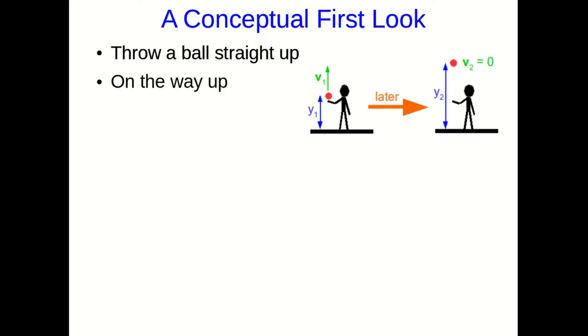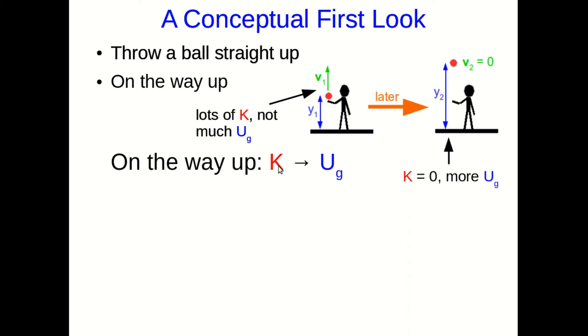And on the way up, it starts off just as it leaves your hand and it's going fast. And so, it has a lot of kinetic energy. But it's low down, so it has not much gravitational potential energy. But now, a little later, it's at its maximum height and so it's momentarily at rest. So at that instant, it has no kinetic energy. But it has gone higher, and so it has more gravitational potential energy. And so, what we can say is that on the way up, its kinetic energy was transformed into gravitational potential energy. And we'll write it this way.